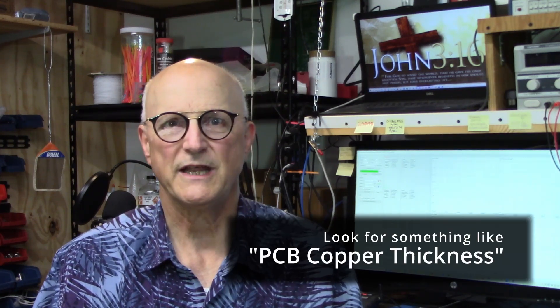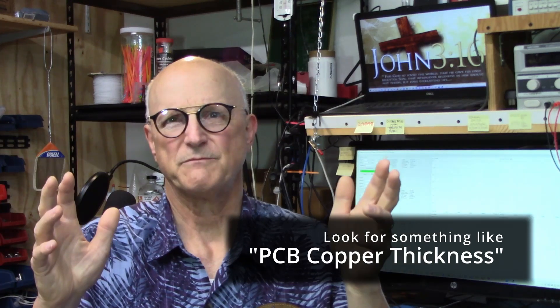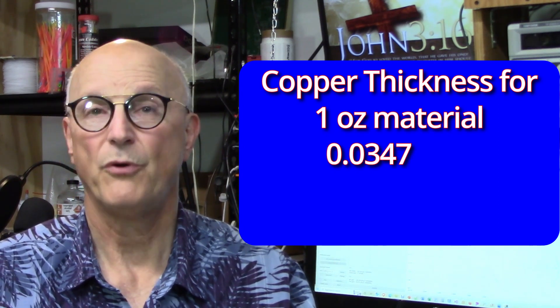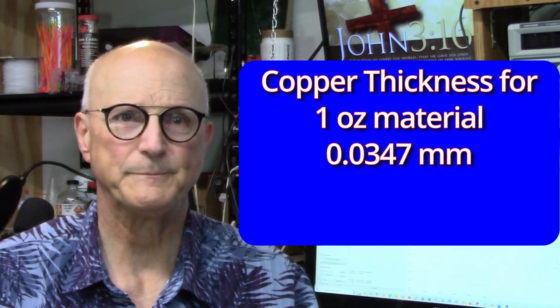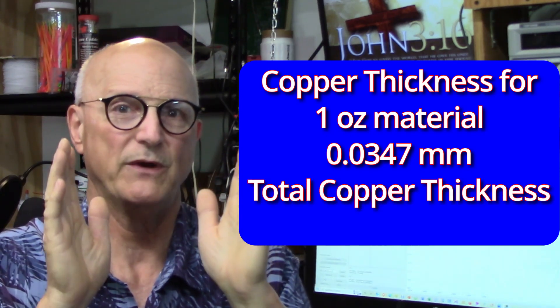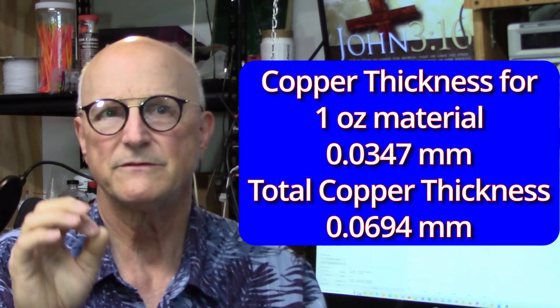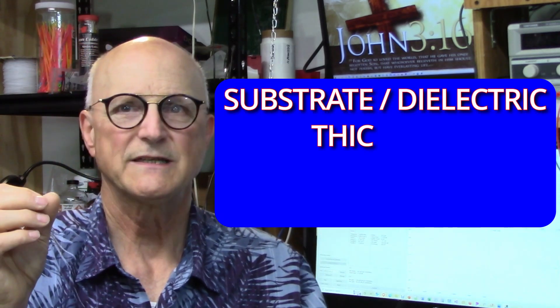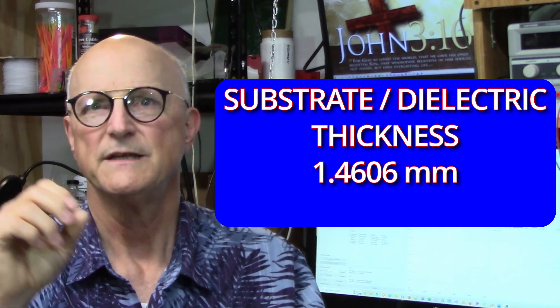The most common PCB material out there is manufactured with what is called 1 ounce copper. What this means is that they spread 1 ounce of copper across every square foot of PCB substrate. Now, unless you know for certain otherwise, this is probably what you are holding in your hand. So, we search the internet for something like PCB copper thickness. And find a table that will tell us that 1 ounce of copper on a PCB is 0.0347 millimeters thick. We have copper on both sides of the substrate. So the total copper thickness that we have to subtract will be twice this or 0.0694 millimeters. Now we measured the overall thickness at 1.53 millimeters. We subtract our copper thickness from this. So we get a substrate thickness of 1.4606 millimeters.